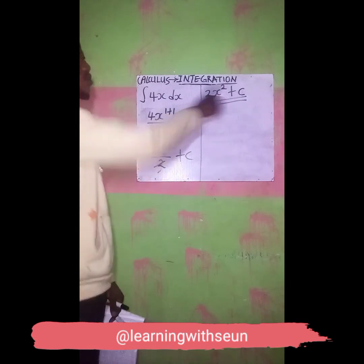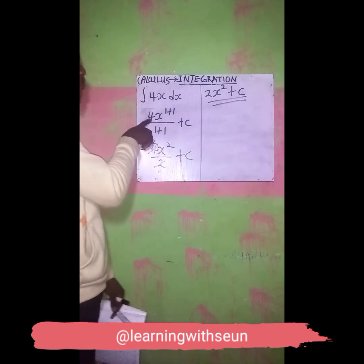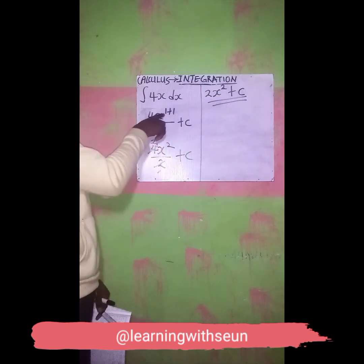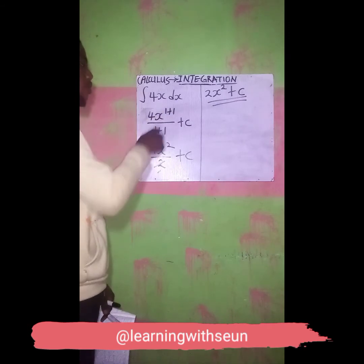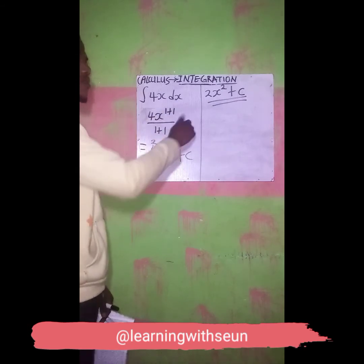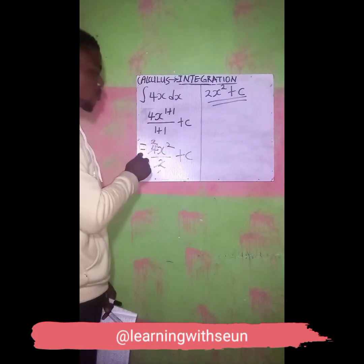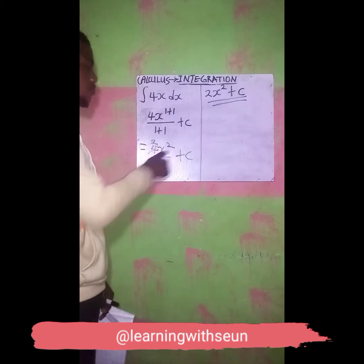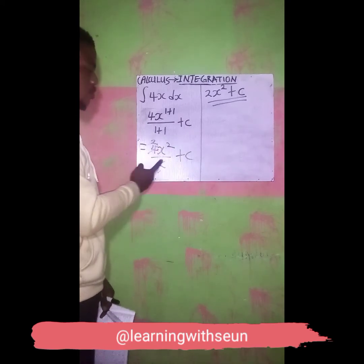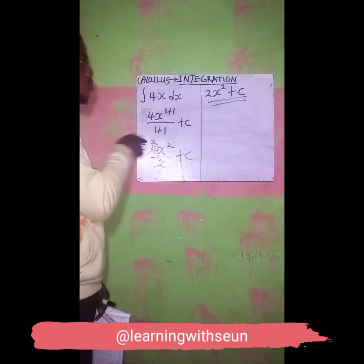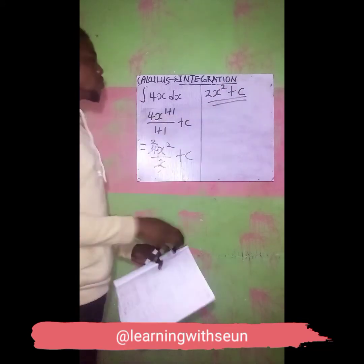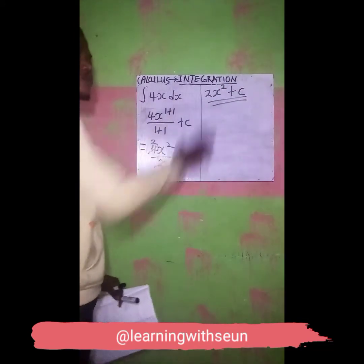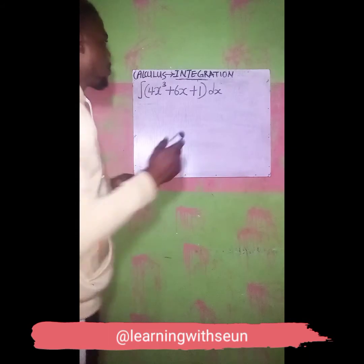So therefore, if I integrate 4s I will get 2s squared, because 4s raised to power 1 plus 1 over 1 plus 1 equals 4s squared over 2 plus C — the 2 cancels the 4 giving 2 — so we have 2s raised to power 2 plus C. This is an example of an indefinite integration.